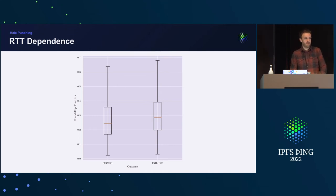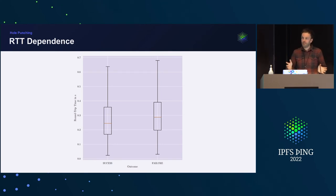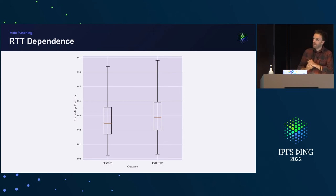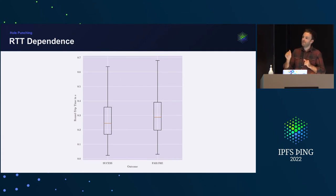I also created a graph looking at the round-trip time measurement and how success rate depends on it. I imagined that if I'm in Iceland hole punching another peer also in Iceland but the relay is in Australia, we'd have a very long RTT and the synchronization might not work well. Looking at the data: there is a tendency that higher RTT correlates with higher failure rates, but it's not as statistically significant or pronounced as I would have expected.